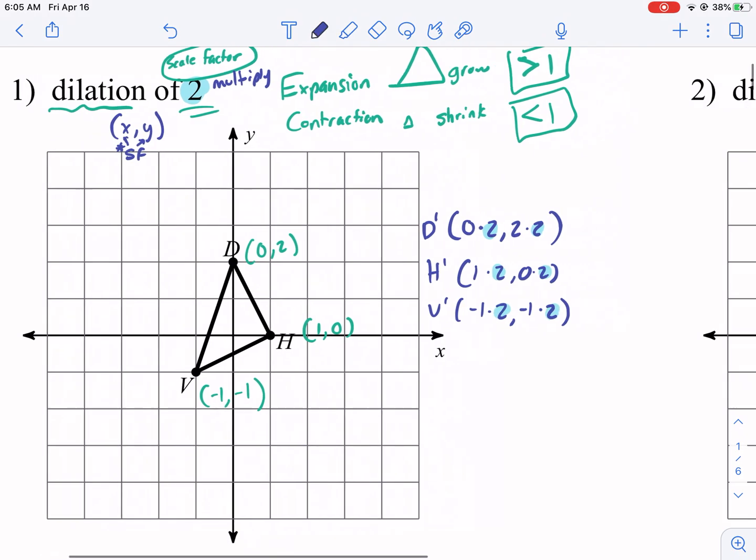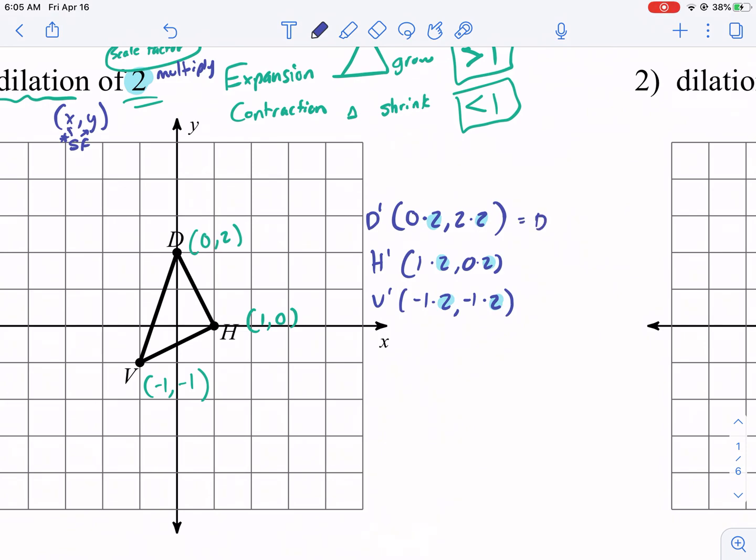Now, what is the new result of where this should be? Well, d prime is now going to be at 0, 4. h prime is going to be at 2, 0. And then v prime is going to be at negative 2, negative 2. So we're going to go ahead and plot these new points. So 0, 4 is there. 2, 0 is there. And then negative 2, negative 2 is right there.